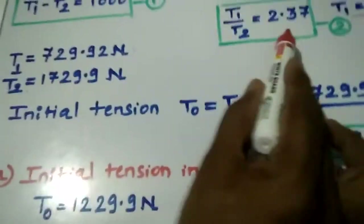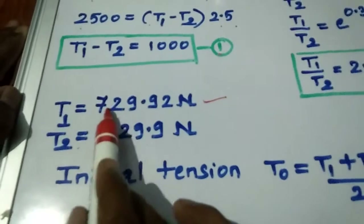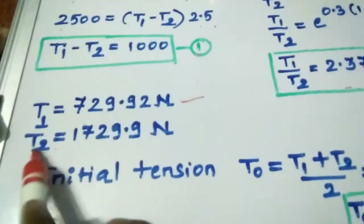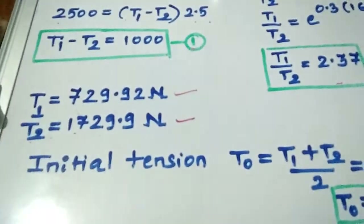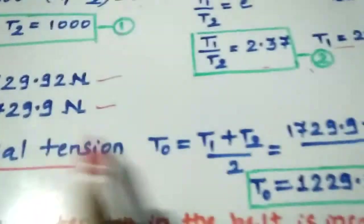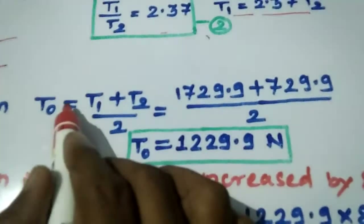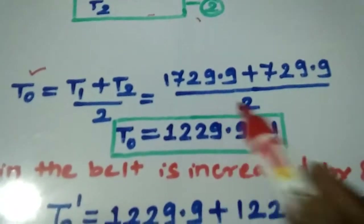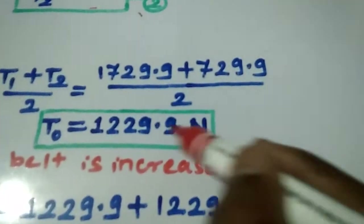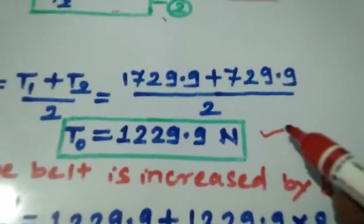Using these two equations, we can find T1 and T2. From the calculation, T1 comes out as 1729.9 Newton and T2 as 729.92 Newton. Then we find the initial tension using T0 equal to T1 plus T2 divided by 2. Summing these two values and dividing by 2, the initial tension T0 comes out as 1229.9 Newton.